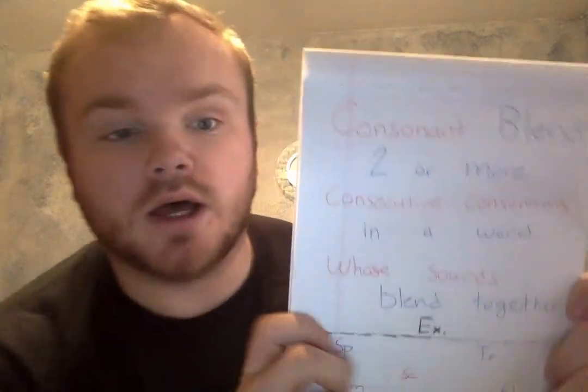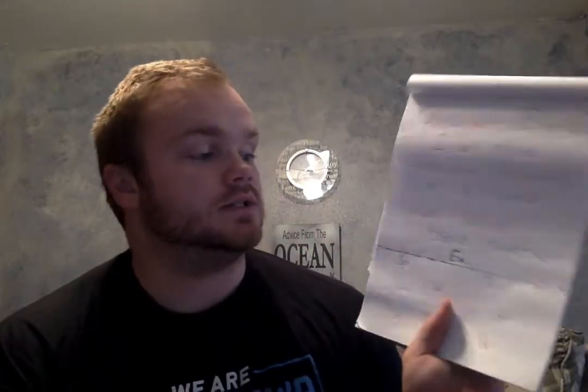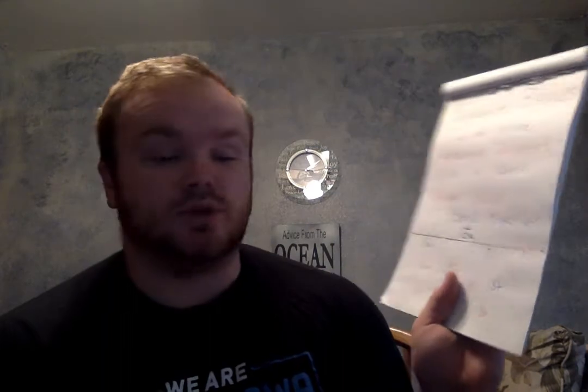As we go through my lesson, we're going to be starting off at the carpet, talking with my anchor chart up. I will address the class: 'We're going to learn about consonant blends.' Within my classroom, we've started a relationship where they reply, 'What is a consonant blend?' And through a consonant blend, it is two or more consecutive consonants in a word whose sounds blend together.